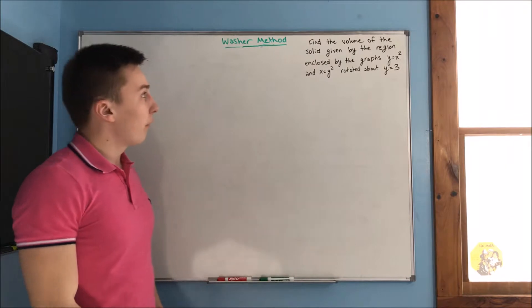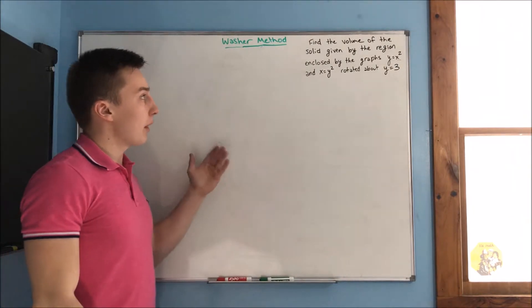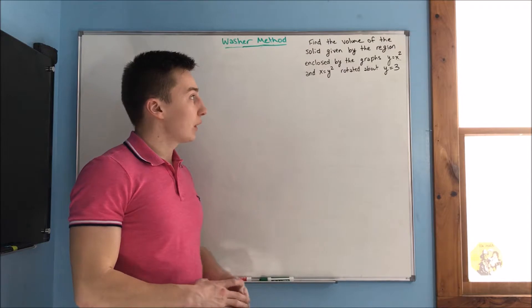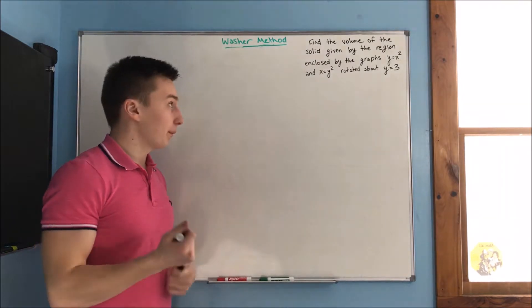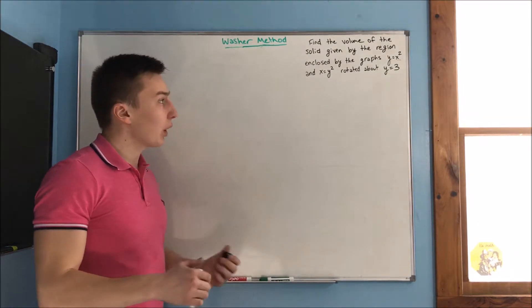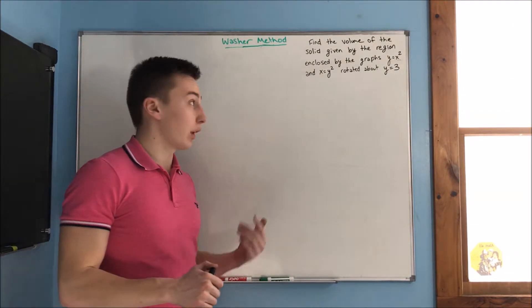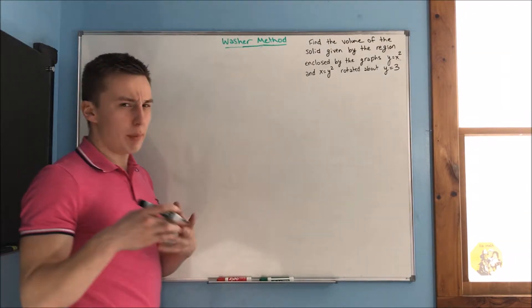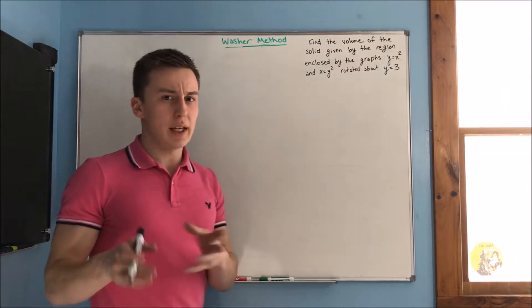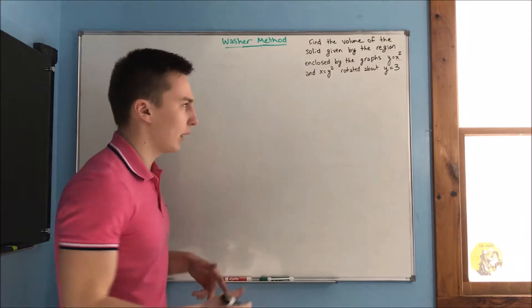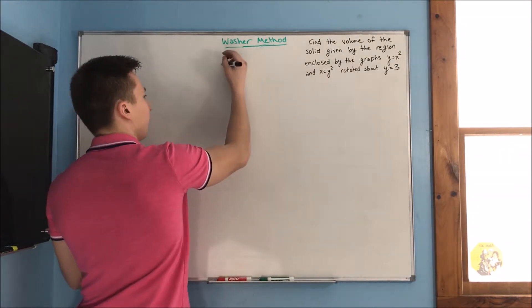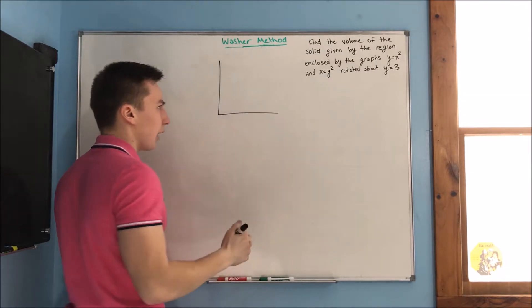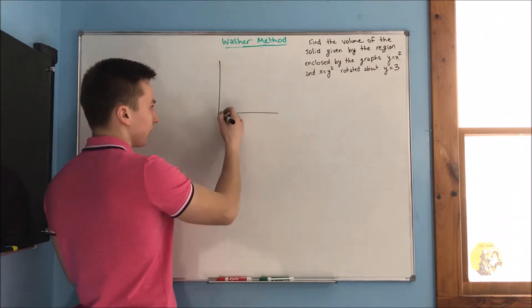Here is our next problem. Find the volume of the solid given by the region enclosed by the graphs y equals x squared and x equals y squared, and we are going to rotate this about y equals 3. Let's draw a graph — I'm going to draw this a little bit bigger this time. We have y equals x squared and we have x equals y squared.